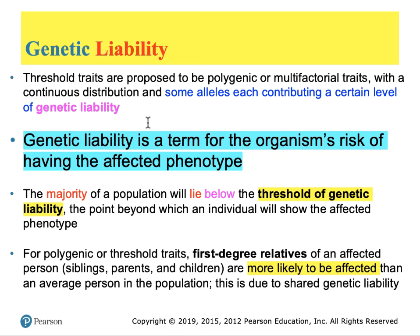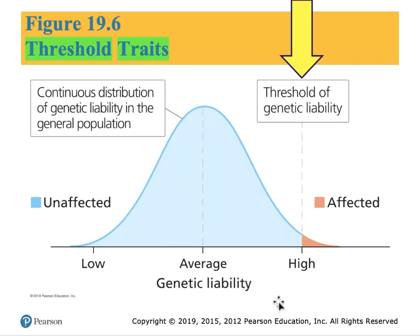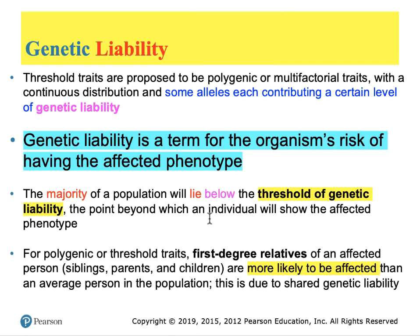Genetic liability is the term for an organism's risk of having the affected phenotype. Once you approach the high end of the genetic liability spectrum, the chance of having the disease increases, whereas at the low end there is a very remote probability of having the condition. With most disease conditions, the majority of the population will lie below the threshold of genetic liability.